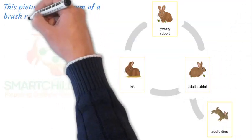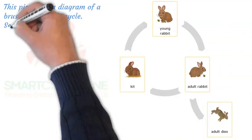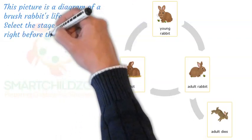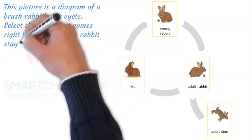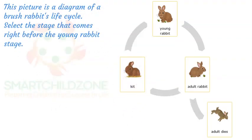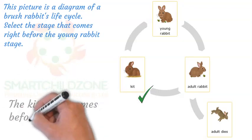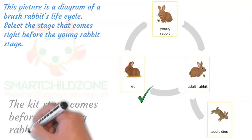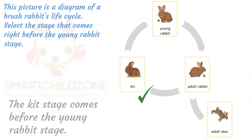This picture is a diagram of a brush rabbit's life cycle. Select the stage that comes right before the young rabbit stage. Find the young rabbit stage in the life cycle diagram and follow the life cycle backward. The kit stage comes before the young rabbit stage.